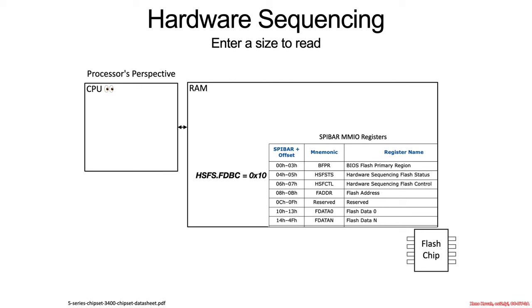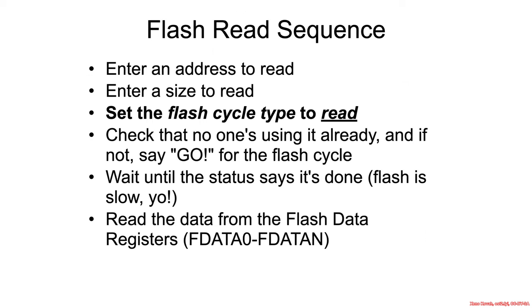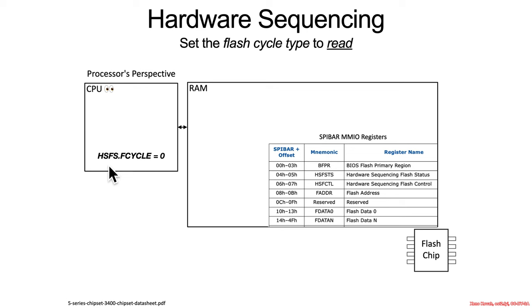Write that in. Set the flash cycle type to read — hardware sequencing flash status dot FCYCLE equals 0 for a read operation.